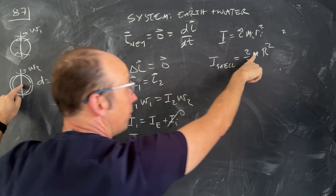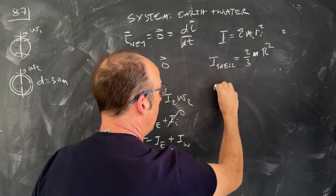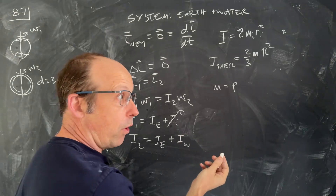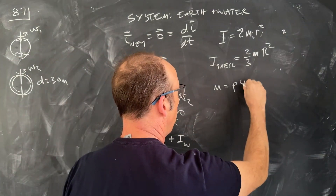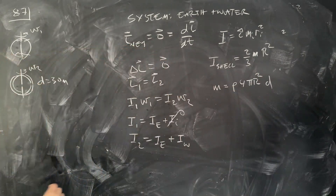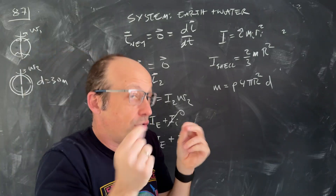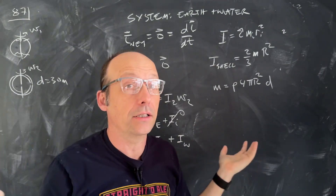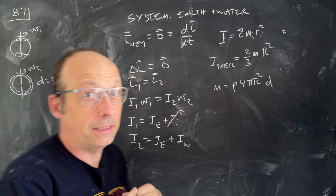The moment of inertia of a thin shell is (2/3)·m·r², where r is the Earth's radius. The mass of the water is density times volume. The volume of the thin shell is 4·pi·r²·d, where d is the depth (30 m). Since the thickness is tiny compared to the Earth's radius, we approximate the shell volume as area times depth.